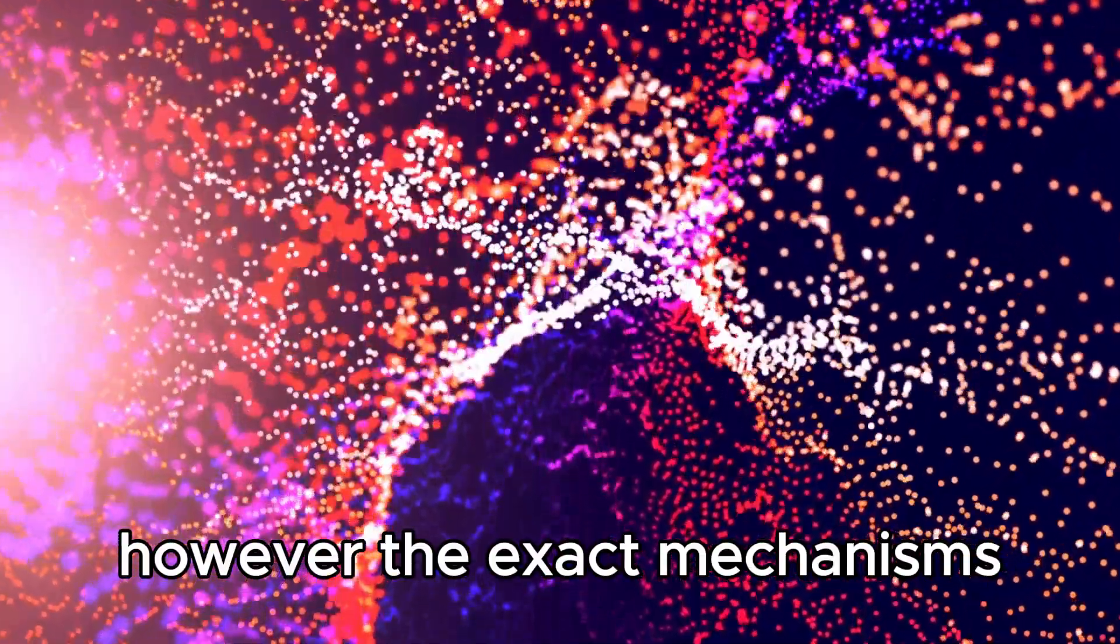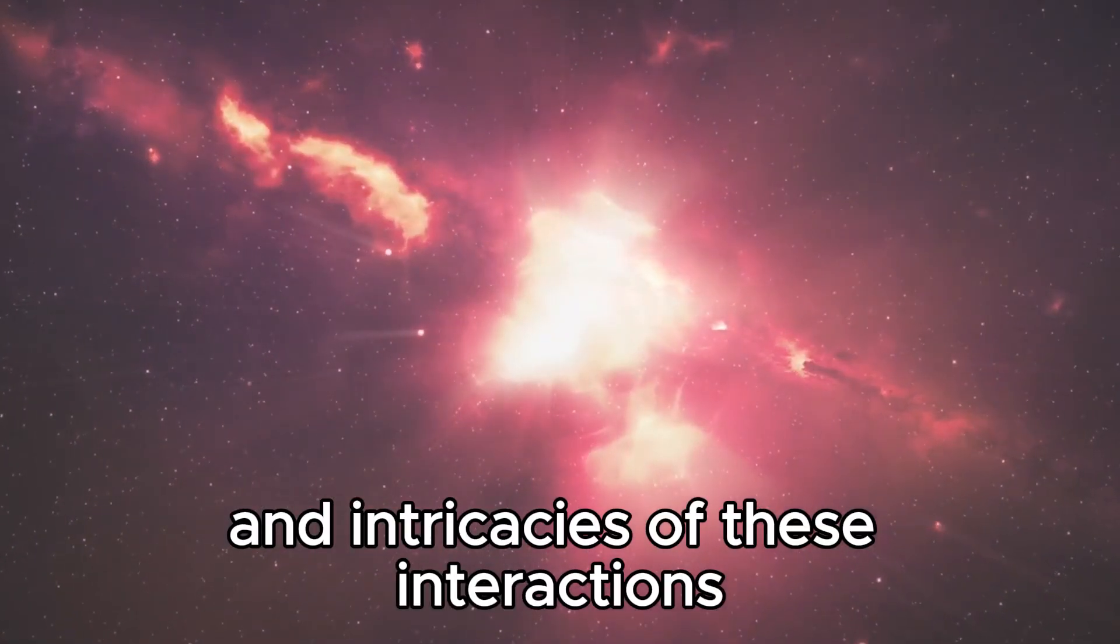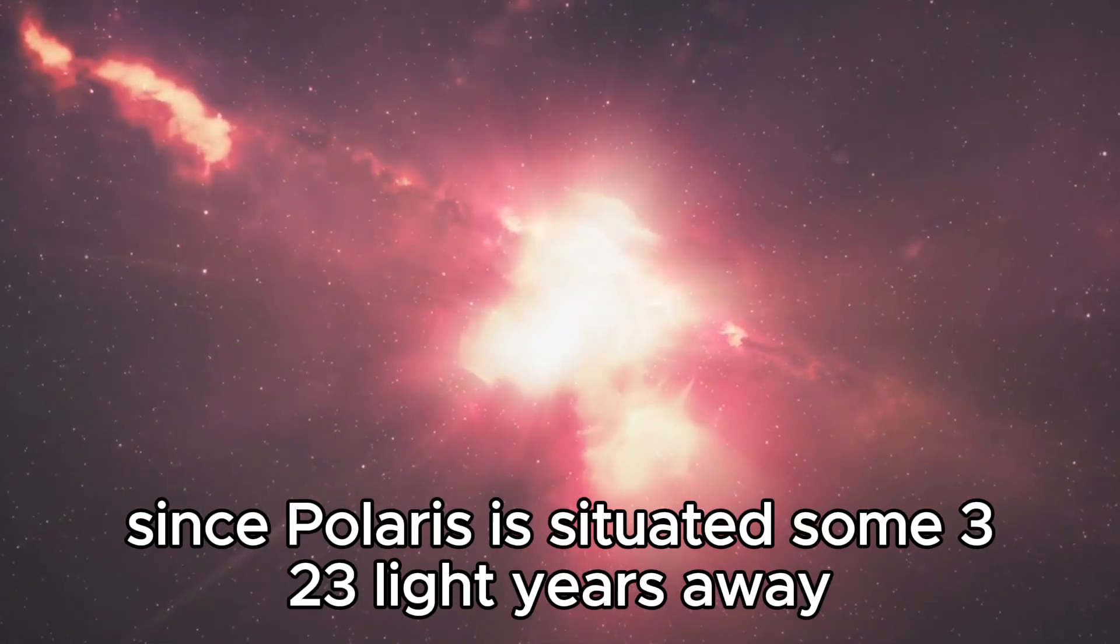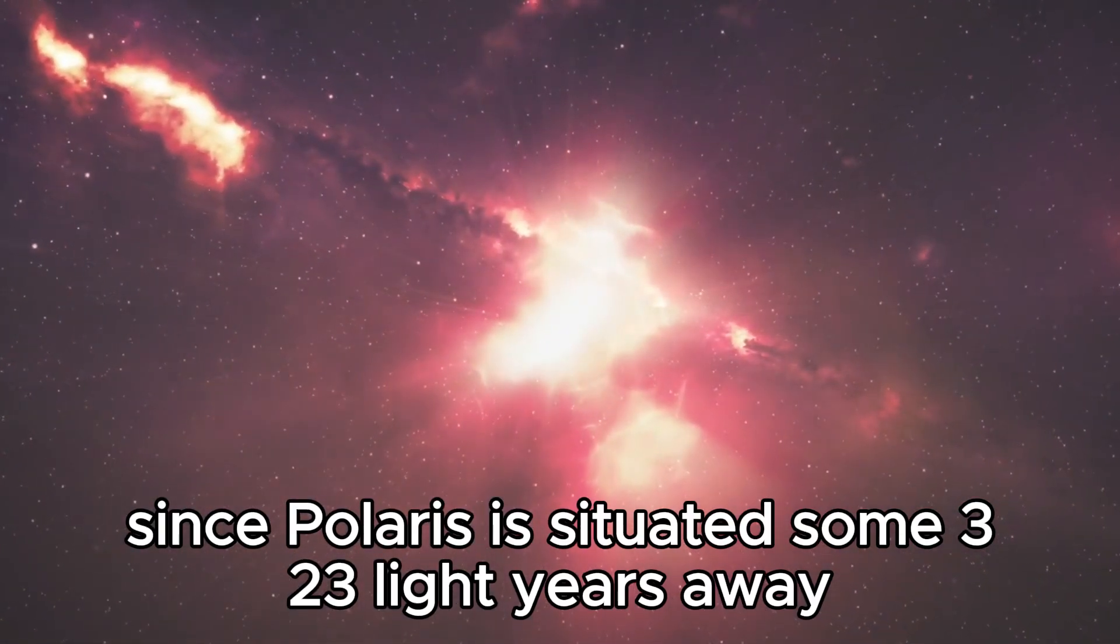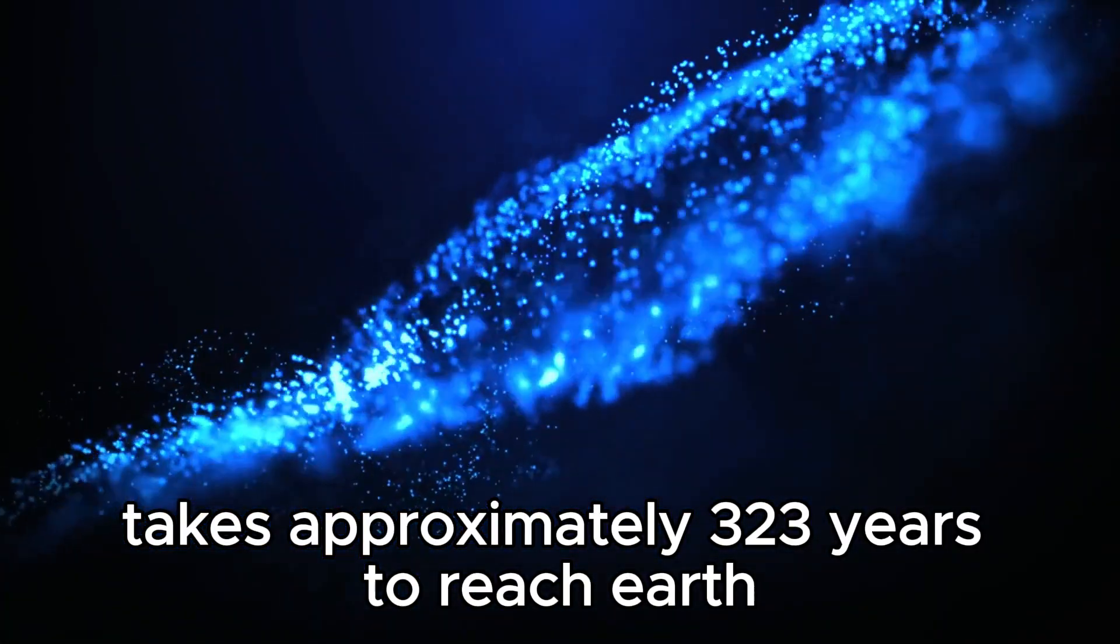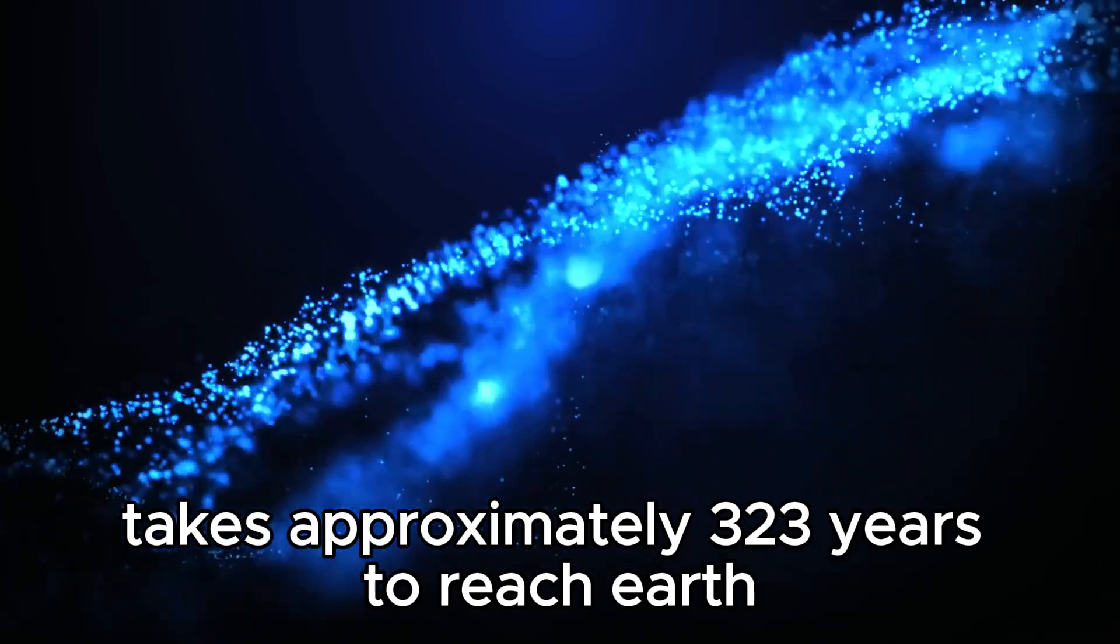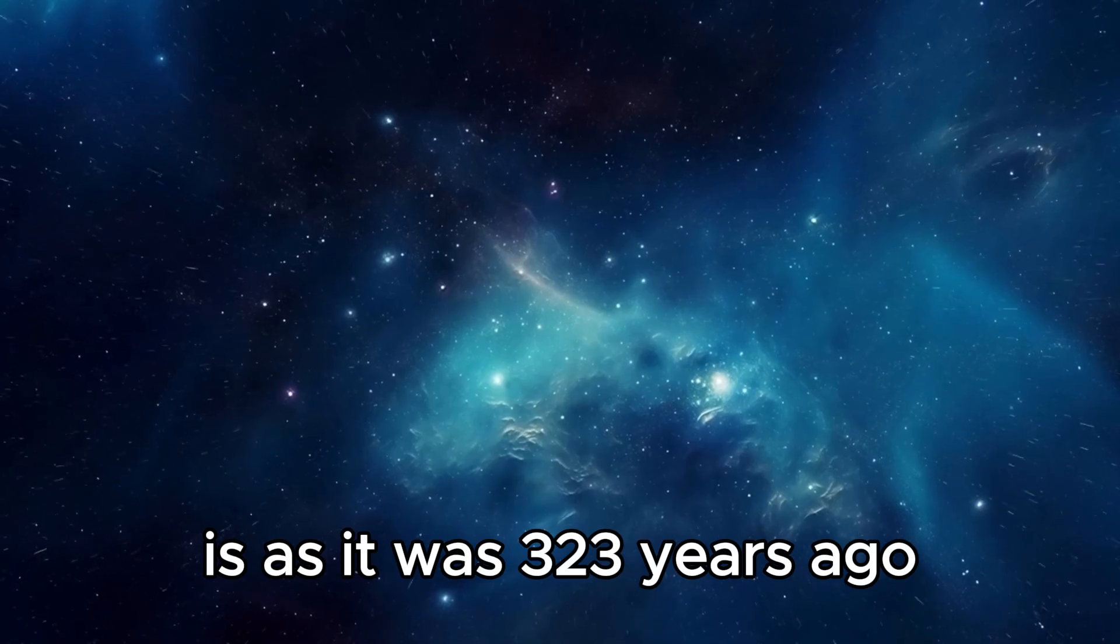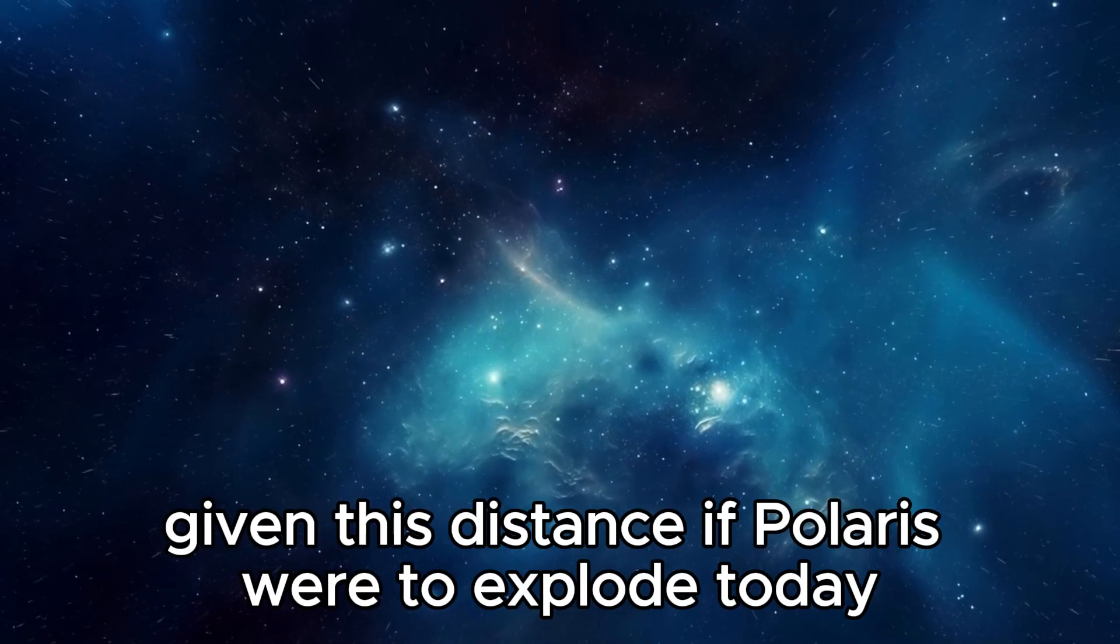However, the exact mechanisms and intricacies of these interactions are not yet fully known. What we do know is that since Polaris is situated some 323 light-years away, the light from Polaris takes approximately 323 years to reach Earth.